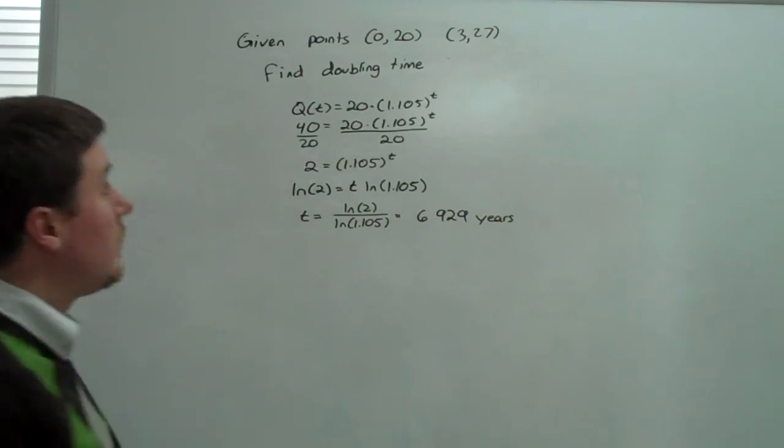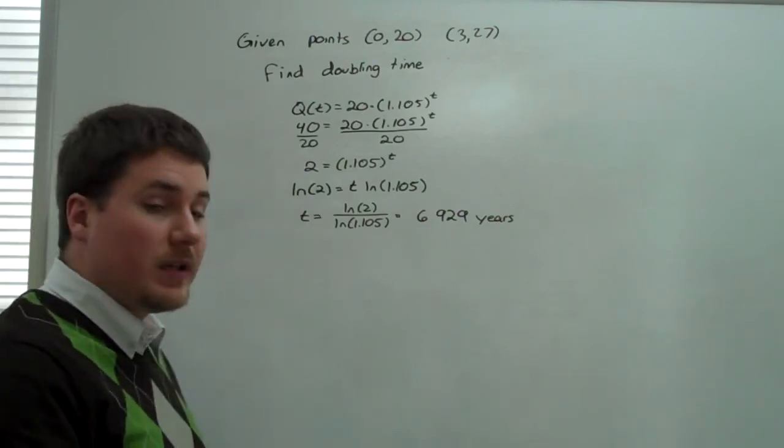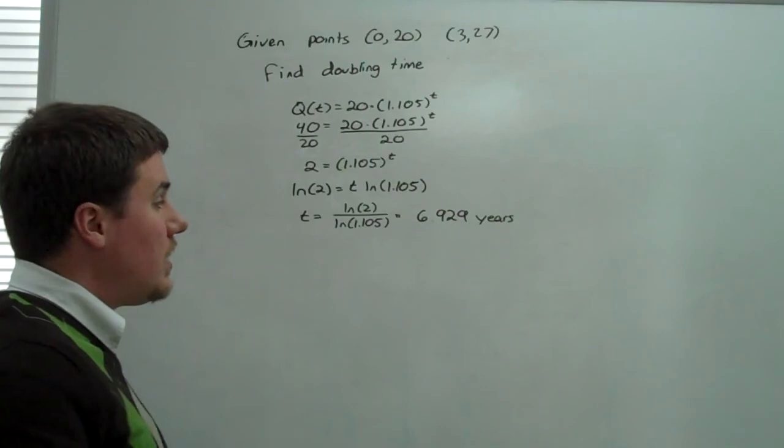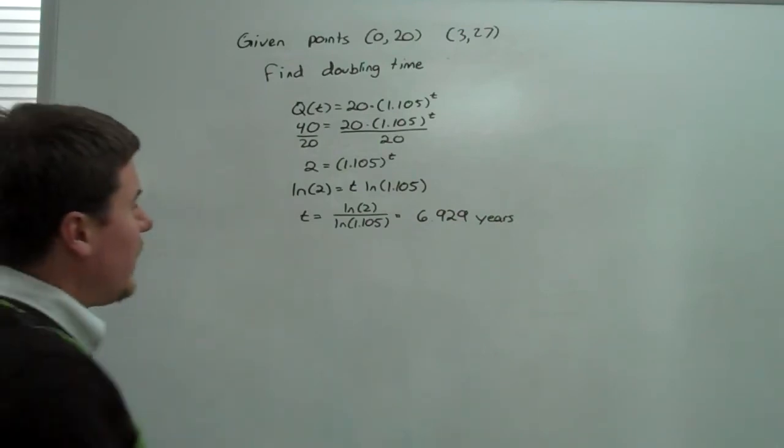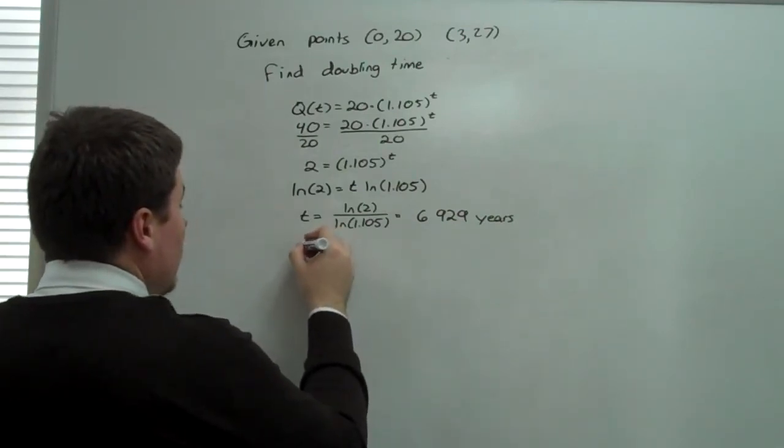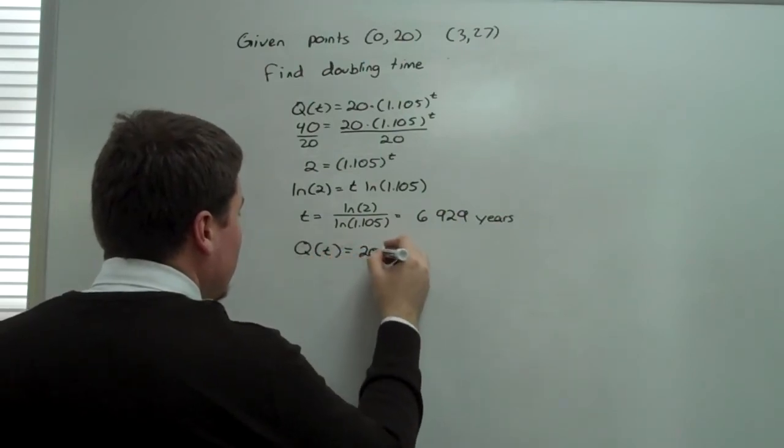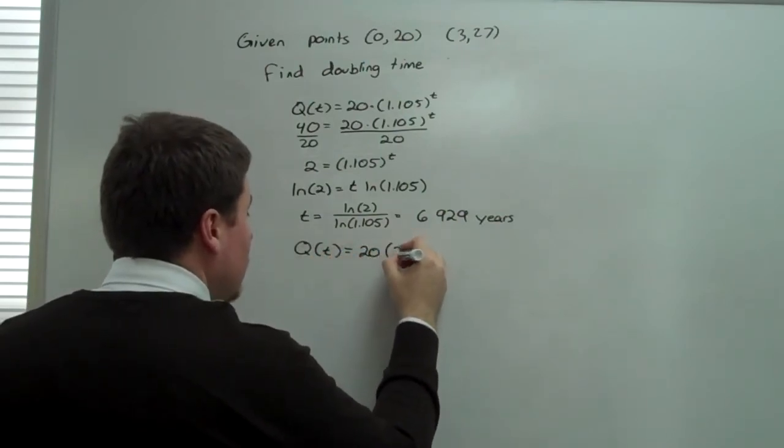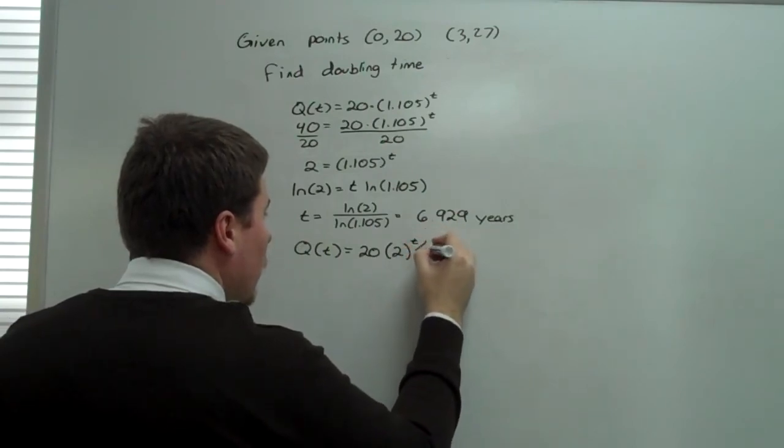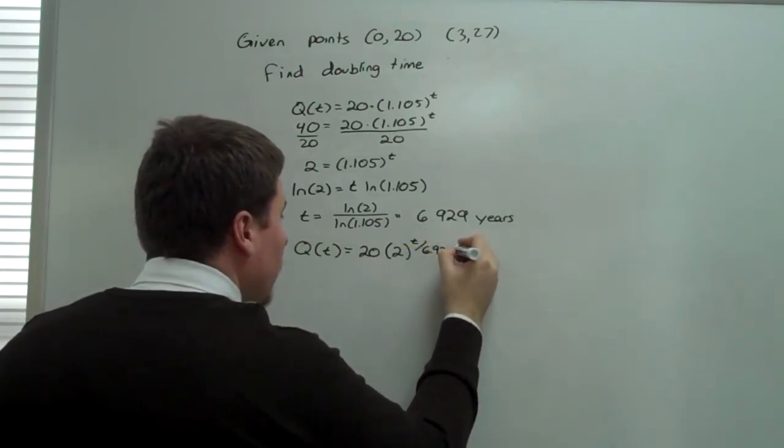Assuming that the unit is in years, this means it doubles every 6.9 years, so almost every 7 years. Now the way that we can rewrite the equation is Q(t) equals 20 times 2 to the t over 6.929.